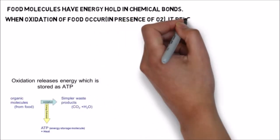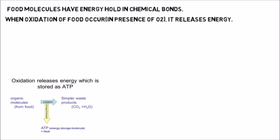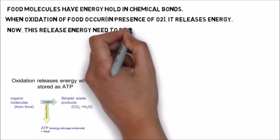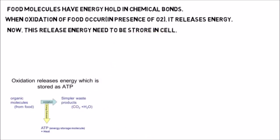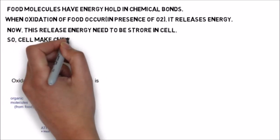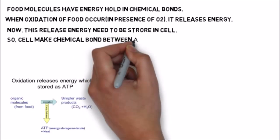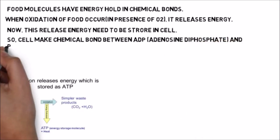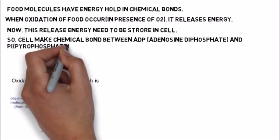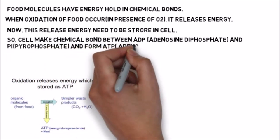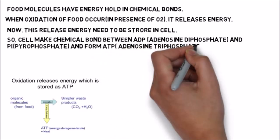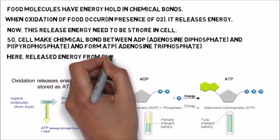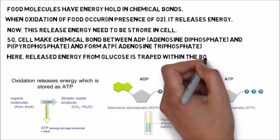When glucose is oxidized, its chemical bonds are cleaved and energy is released from those bonds. This released energy must be trapped and conserved in the cell. The cell forms a chemical bond between ADP (adenosine diphosphate) and Pi (pyrophosphate) to form ATP, adenosine triphosphate. The energy released from glucose is conserved within the bonds of ATP. So for the cell, ATP is the energy currency.